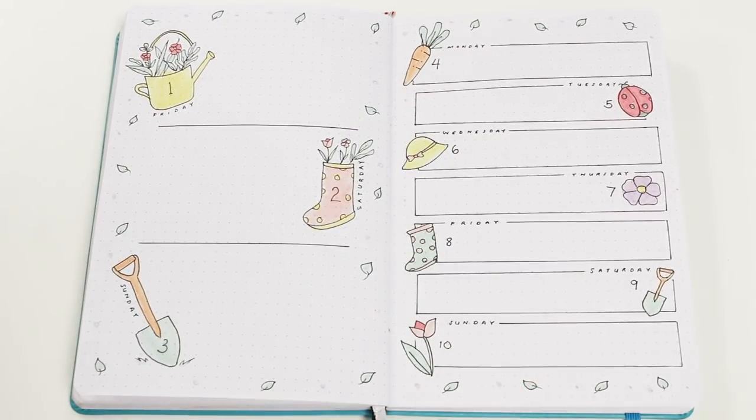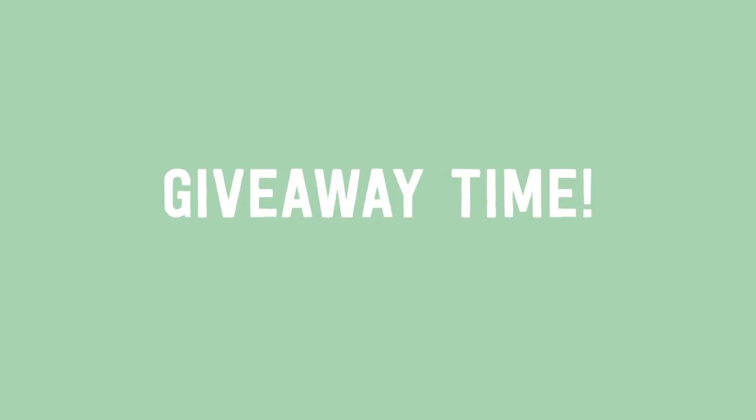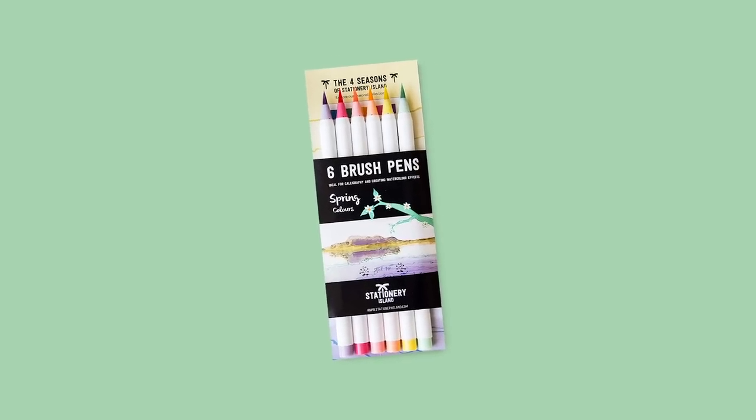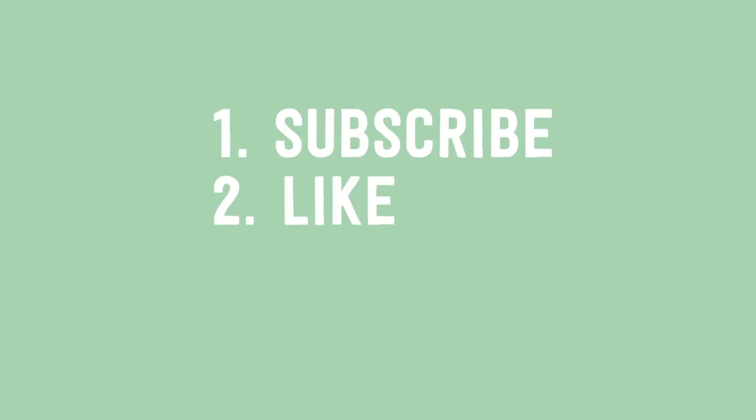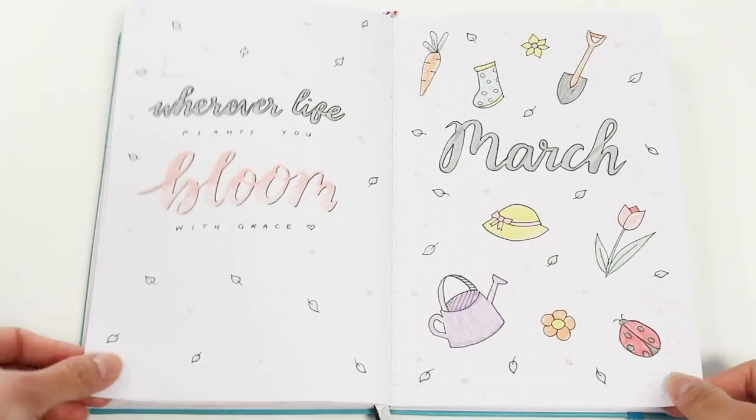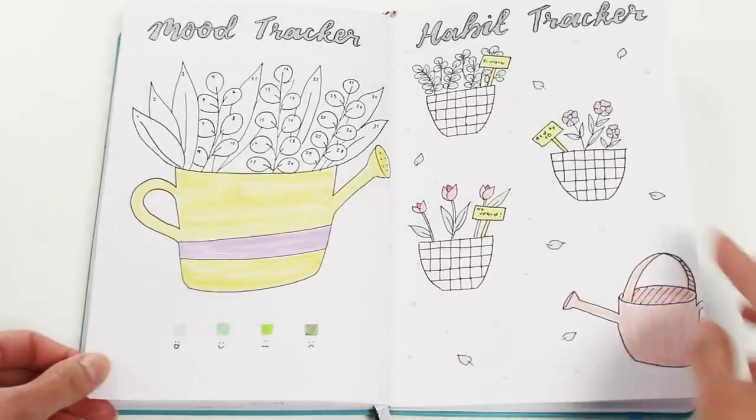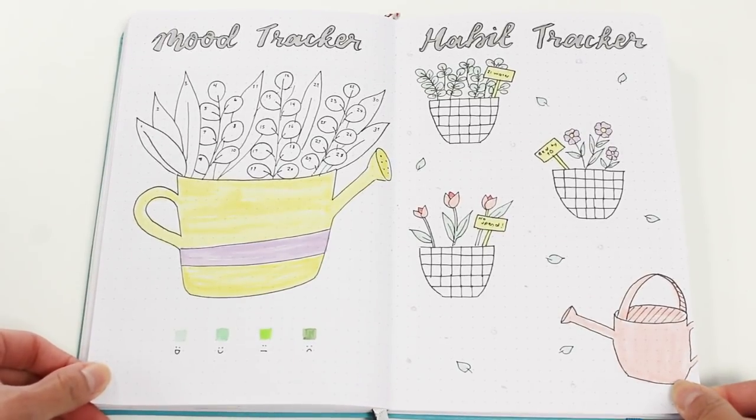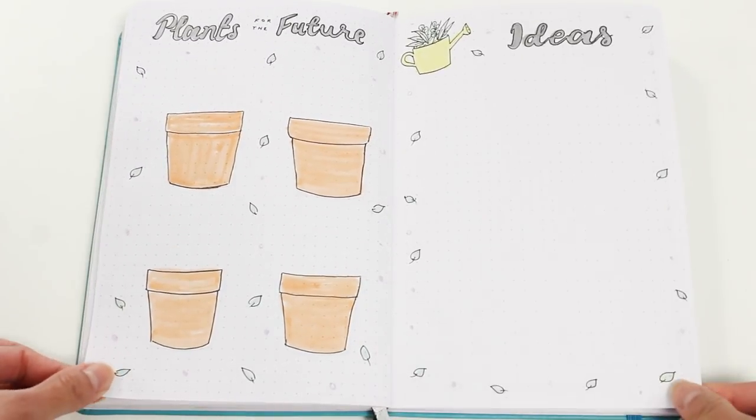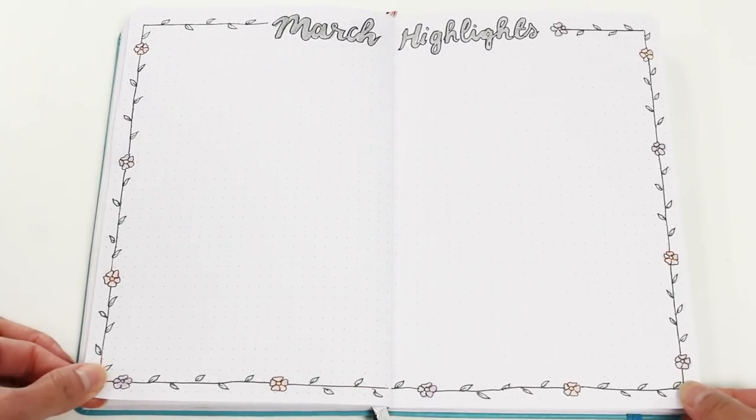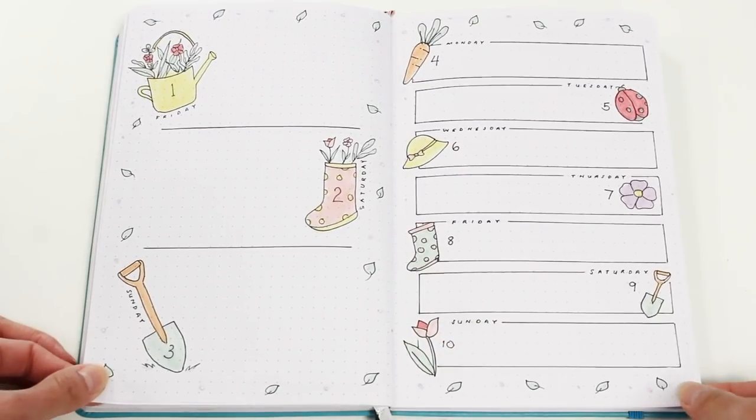And before the flip through, I just want to talk about the giveaway. This time we're giving away a new pack of Stationery Island spring brush pens like the ones you've seen me use throughout this video. To enter, all you have to do is be subscribed to our channel, give this video a thumbs up, and comment your favorite spread down below. And don't forget to subscribe if you haven't already.